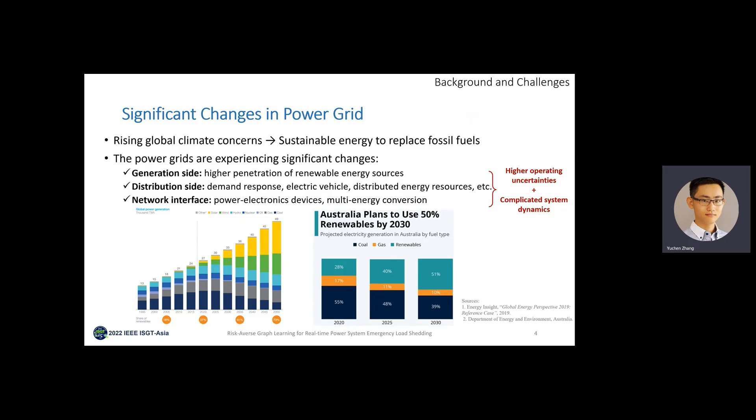I have listed some of the changes here. They are both at the generation side, the distribution side, and also the network interface referring to the power electronic interface to integrate renewable energy sources. With all these ongoing changes in the power grids, the consequence is that the power systems are now exposed to higher levels of operating uncertainties, as well as complicated system dynamics.